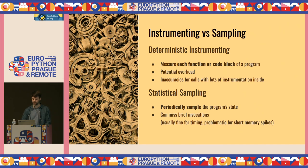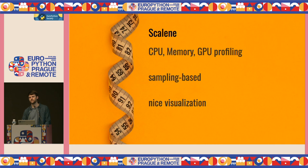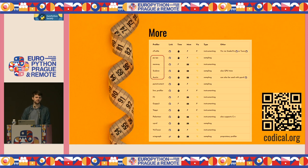For timing, sampling profilers are generally fine because we care about time scales anyway. For memory, you might miss brief allocations. In this talk we use Scalene, which supports both CPU timing and memory profiling as well as GPU. It is sampling-based, which is nice especially for timing profiles, and it has a useful visualization. There are many more profilers available — here is a list from my blog. My personal favorites are PySpy, MemRay, Scalene, and Austin. They all have different pros and cons.